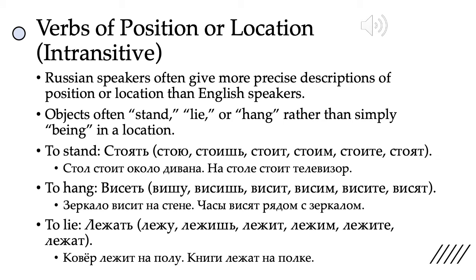Let's start by looking at these intransitive verbs of position or location. Intransitive verbs are verbs that cannot take a direct object. These intransitive verbs of position or location are the equivalent of 'to stand,' 'to hang,' and 'to lie.' A lot of times things in Russian don't just 'be' somewhere — they stand, hang, or lie somewhere. You have to indicate what position they're in when talking about their location.